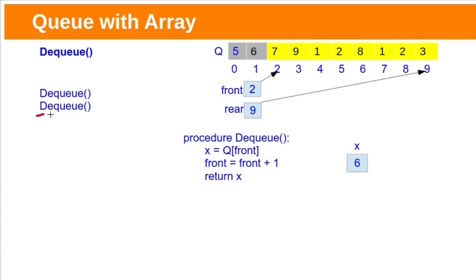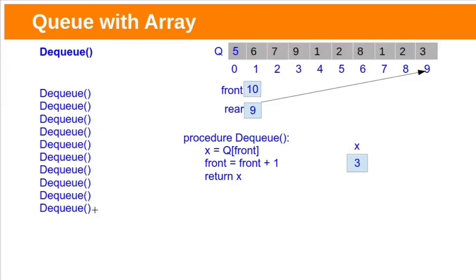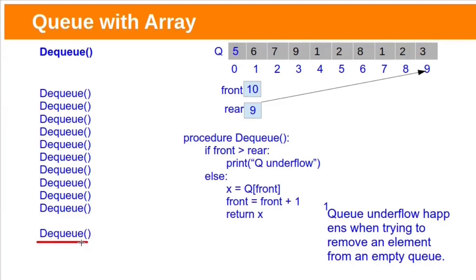Suppose if you want to remove one more item, the same process is followed. After removing 6, Front will be at index 2. Suppose you perform 10 Dequeue operations — for the 10th Dequeue operation it will return element 3, and the queue will be empty. After that, Front will be 10. If you perform one more Dequeue operation on an empty queue, queue underflow will occur. To identify queue emptiness: one condition is if Front is greater than Rear — here Front is 10 and Rear is 9 — this occurs when all contents have been deleted from the queue.